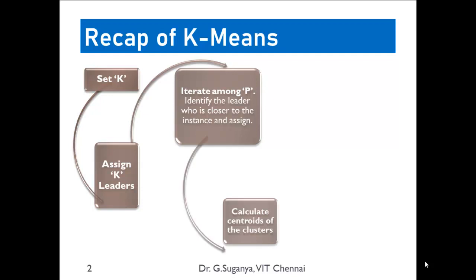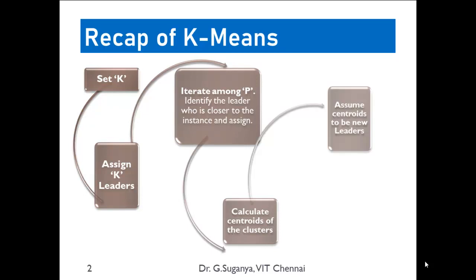Once done, you have to identify the centroids of the clusters. What is a centroid? It is nothing but the summation of all the attributes corresponding to a cluster divided by the total number of elements in the cluster — which is nothing but the mean. So that becomes the centroid of the cluster. Once done, these centroids become the new leaders.